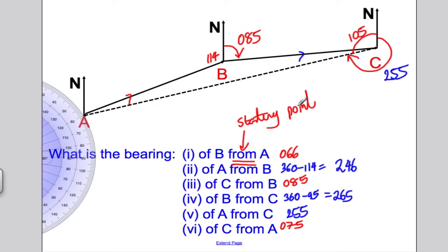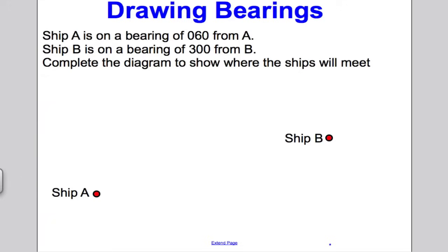Now a quick example on drawing a picture out using bearings. So, let's have a look. This is the other thing that can come up in the exam review. That ship A is on a bearing of 060 from the point A, and this is our point A. And ship B is on a bearing of 300 from B, and this is our point B. Complete the diagram to show where the ships will meet. First thing you do, always very important, draw in your north lines, because all bearings are measured from the north. So, I'll start off by doing the obvious there, and labelling in that that is north, and that is north.